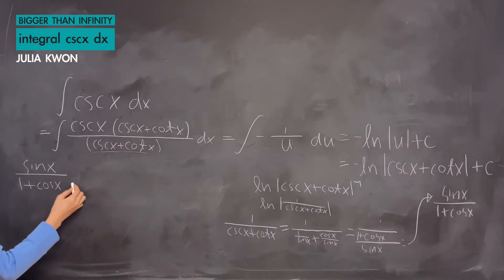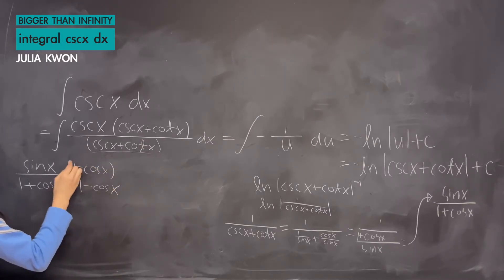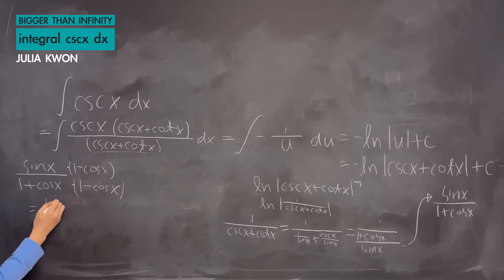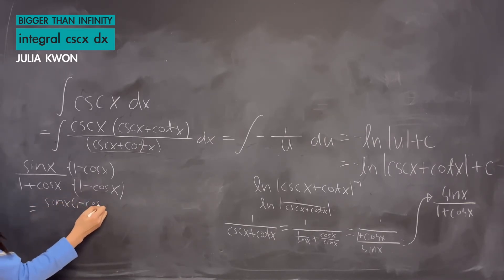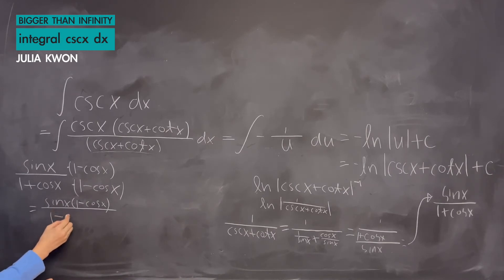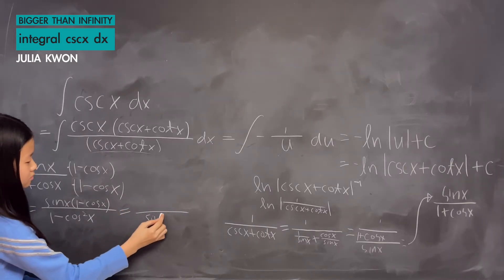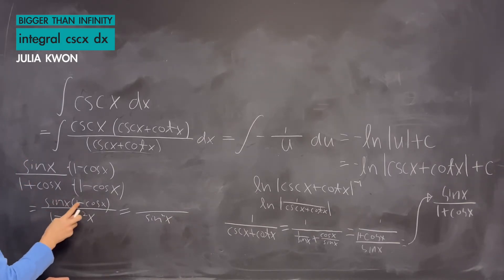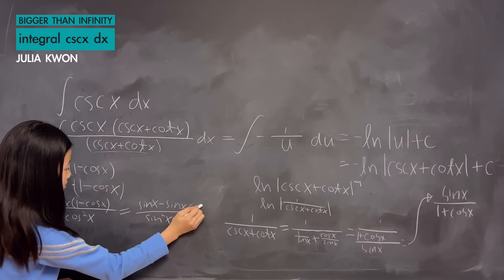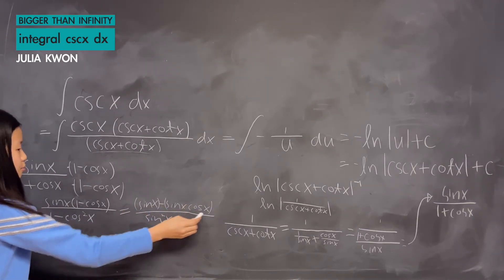We multiply 1 minus cosine x on top and bottom. The numerator becomes sine x times (1 minus cosine x). For the denominator, multiplying gives 1 minus cosine squared x. By the Pythagorean identity, 1 minus cosine squared x equals sine squared x. We then separate the numerator to get two different fractions.